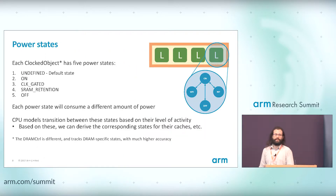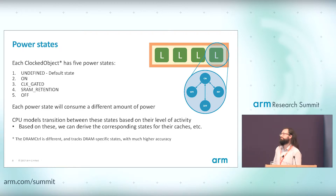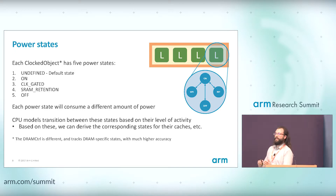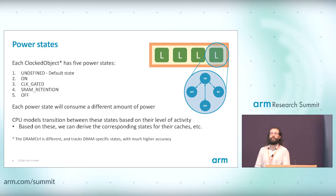Next, power states. You need to understand: is a component on, off, or potentially in WFI? GEM5 by default has five power states for all components apart from the DRM controller. The first is undefined — we don't know what state it's in. The other four you can transition through are: on, clock gated, retention, and off. Each power state consumes a different amount of power, so you need to model them differently. CPU models transition between these states automatically; for other components like L1 cache, you derive the state from the CPU state.